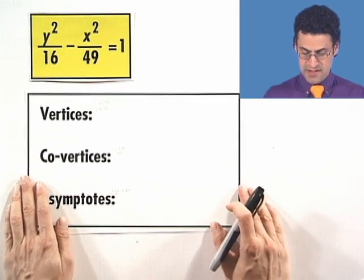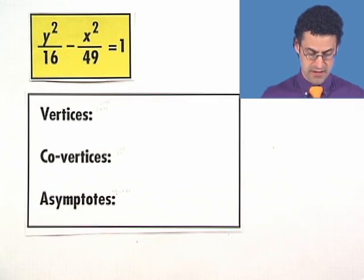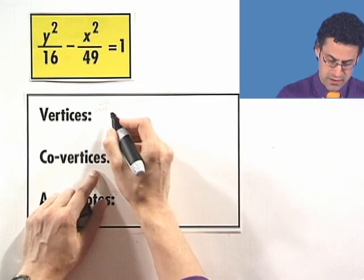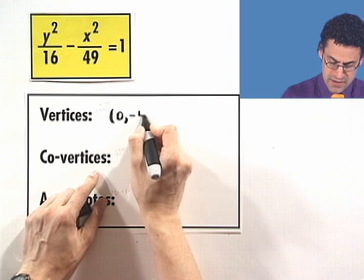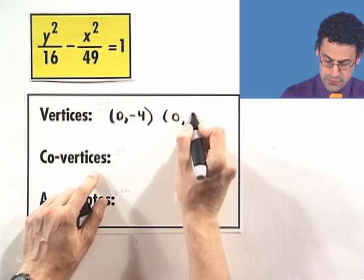Let's not be systematic. I just want to share with you exactly how I think about this thing. So the vertices we've just found are going to be at 0, negative 4, 0, 4.